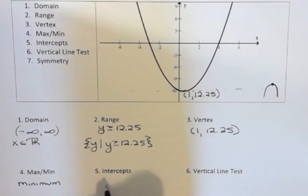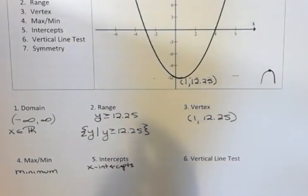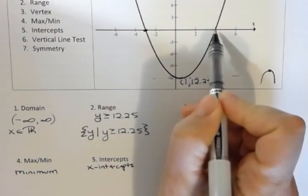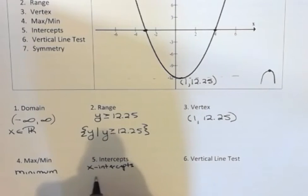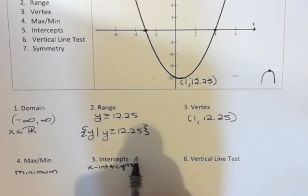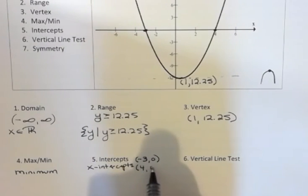What are the intercepts? We have a few intercepts here. We have x-intercepts. You can have an equation that doesn't have any intercepts, but this one has two. It crosses the x-axis in two places. This looks like negative three. So we would say the x-intercept could be (-3, 0), but it can also be (4, 0). We have two intercepts.